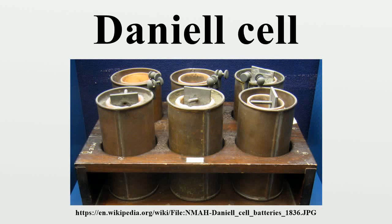The Daniell cell is a type of electrochemical cell invented in 1836 by John Frederick Daniell, a British chemist and meteorologist. It consisted of a copper pot filled with a copper sulfate solution, in which was immersed an unglazed earthenware container filled with sulfuric acid and a zinc electrode. He was searching for a way to eliminate the hydrogen bubble problem found in the voltaic pile, and his solution was to use a second electrolyte to consume the hydrogen produced by the first.